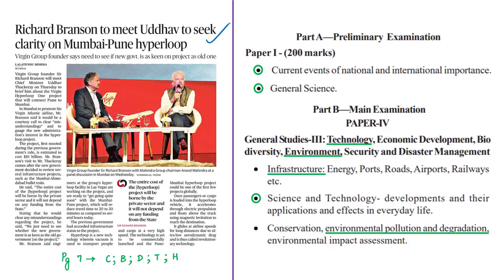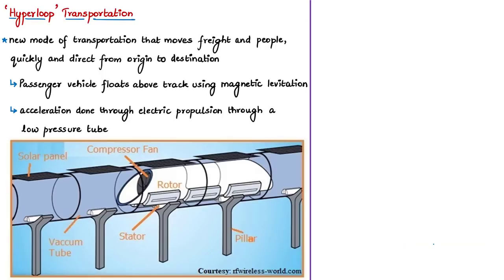This news article is about the Hyperloop project in Maharashtra between Pune and Mumbai. The relevant syllabus for the analysis has been highlighted for reference. Hyperloop is a new mode of transportation that takes both people and goods from one point to another directly, without any stops in between. One speciality of this transportation is the speed at which it can transport goods or people.